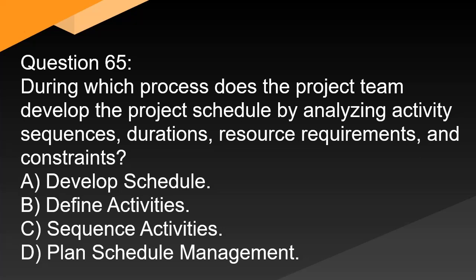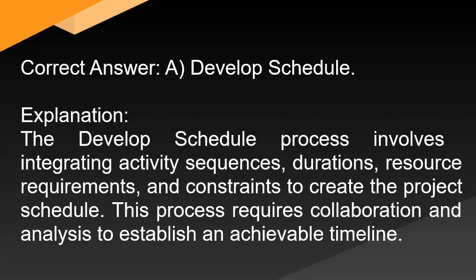Question 65: During which process does the project team develop the project schedule by analyzing activity sequences, durations, resource requirements, and constraints? A. Develop schedule. B. Define activities. C. Sequence activities. D. Plan schedule management. Correct answer: A. Develop schedule. Explanation: The develop schedule process involves integrating activity sequences, durations, resource requirements, and constraints to create the project schedule. This process requires collaboration and analysis to establish an achievable timeline.